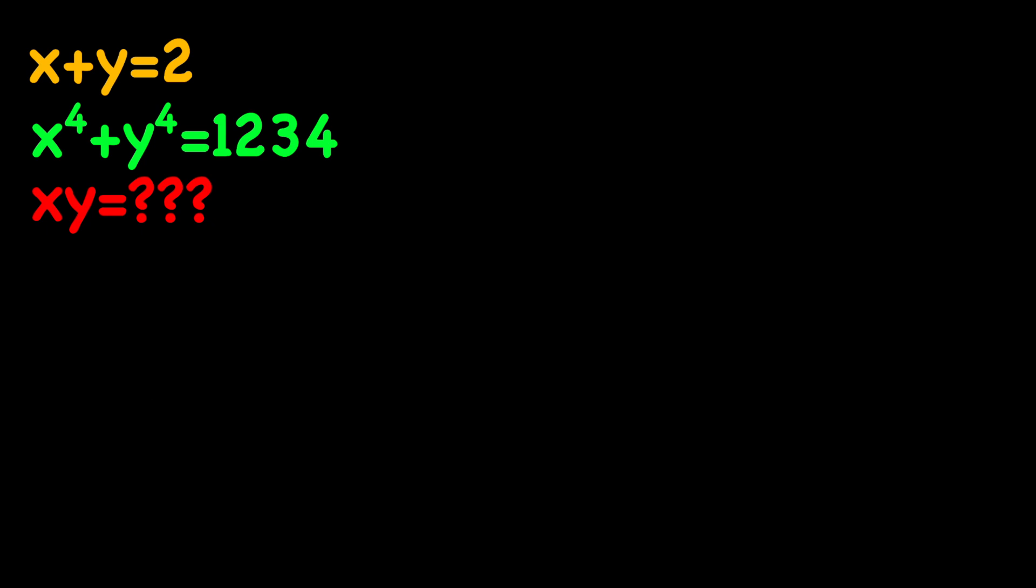So we have x plus y and x to the fourth plus y to the fourth. And here's what I'm going to do. I'm going to use the first equation in a way that I will be able to use the second one. In other words, I'm going to square the first equation twice to get x to the fourth plus y to the fourth in my equation.